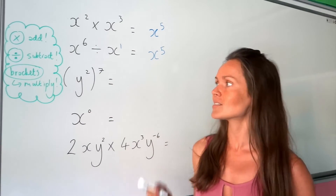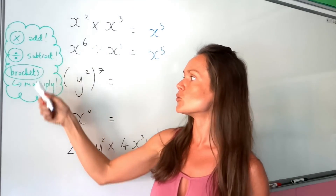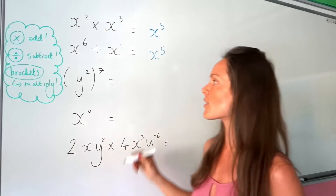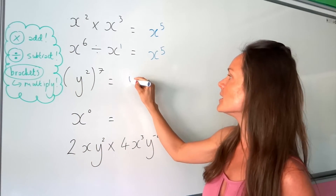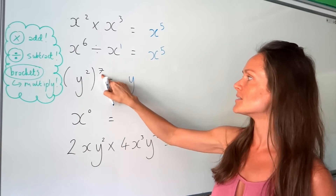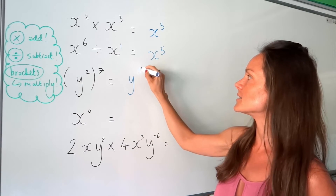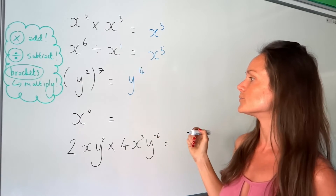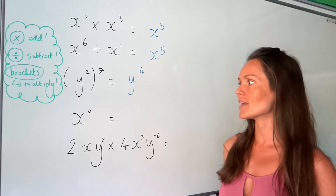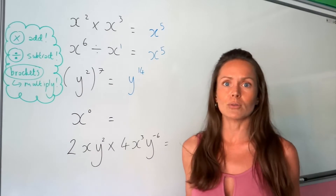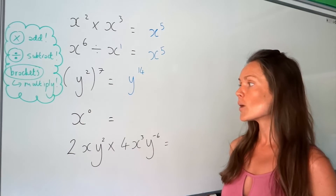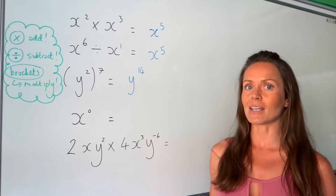On to the next one. This time we've got brackets. Whenever you see brackets it means you must multiply the powers together. So in this one, two multiplied by seven is fourteen.